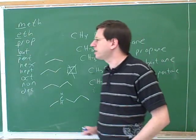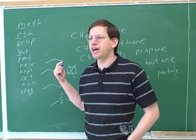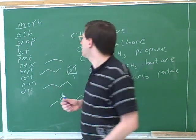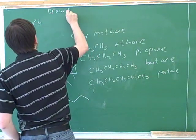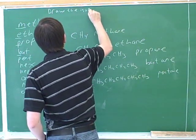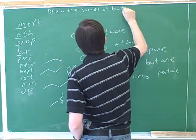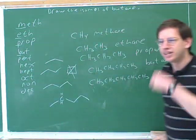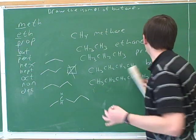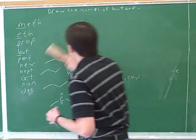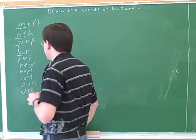Something you're likely to see questions about is isomerism — drawing the isomers of something. So let's try drawing the isomers of butane. This is a pretty popular type of question, and there's a method for learning how to do these. We're going to draw the isomers of butane.